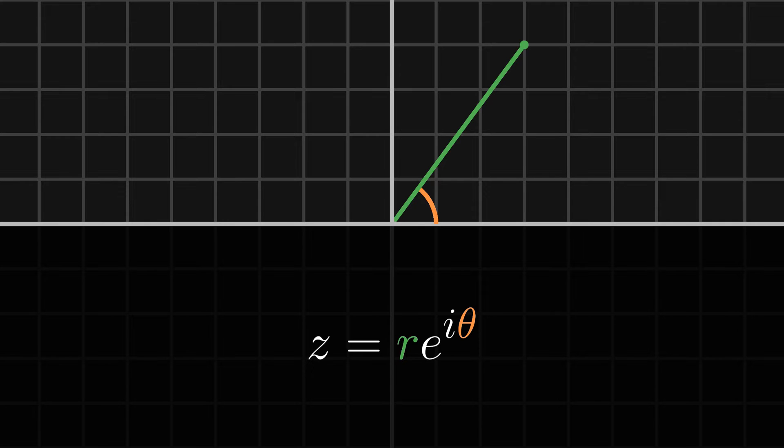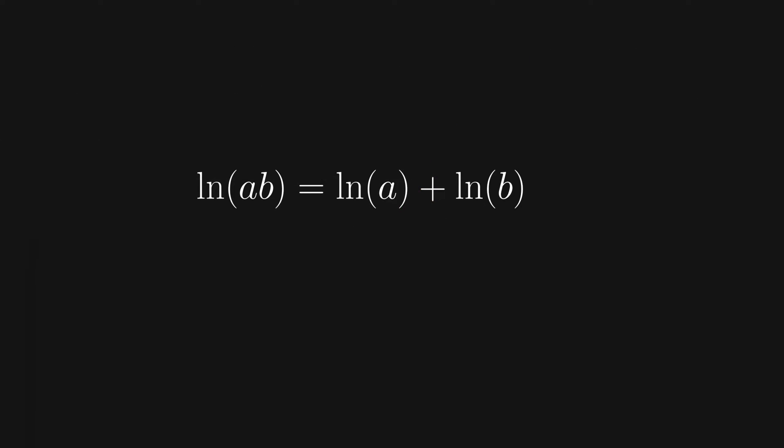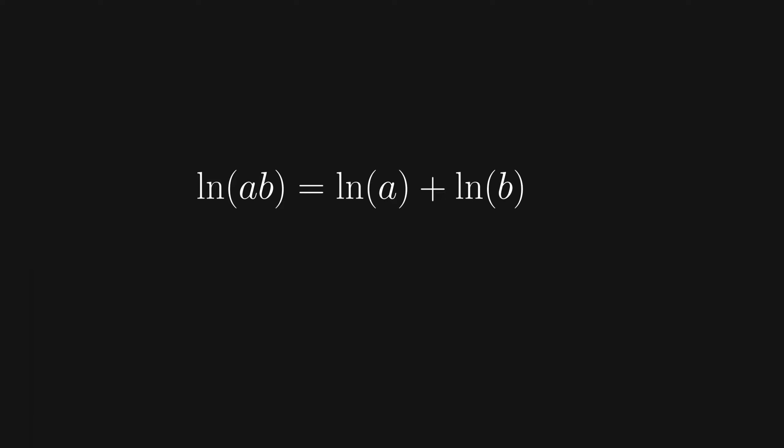Hopefully you'll see that having that e there will come in handy shortly. For our definition of the complex logarithm, we'll need it to satisfy the same properties as a real function, natural log of x. So we'll want it to follow the log sum rule that says natural log of a times b equals natural log of a plus natural log of b.